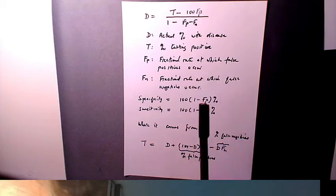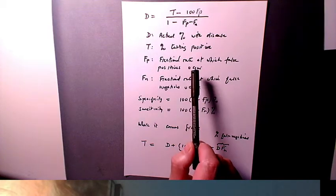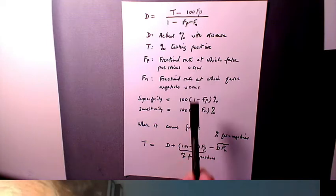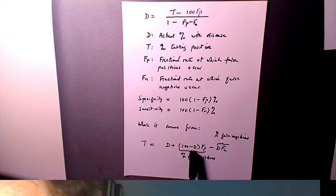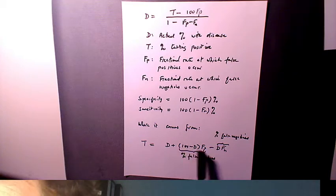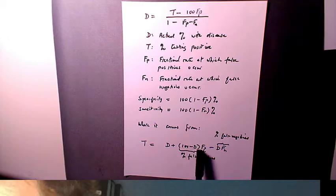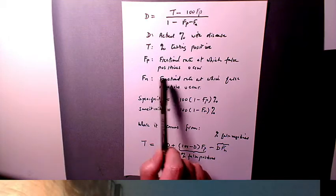What that means is that if we test a number of people, and on any particular day, there typically will be 100 minus D people who do not have the disease, and if we multiply that by Fp, we'll actually get the number of false positives, because these are people who don't have the disease and yet show a positive test.